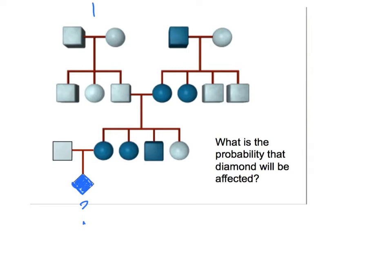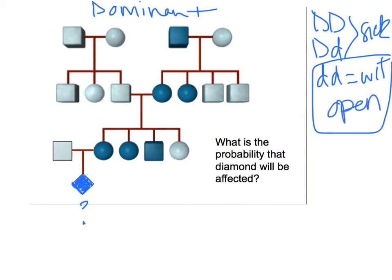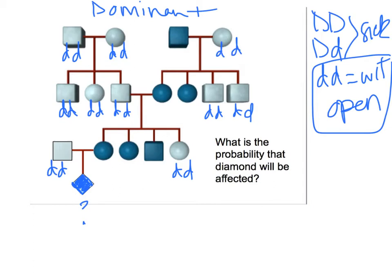Okay, so we're going to go dominant. If this were a dominant pedigree, let's do our big D, big D; big D, little d — these guys are sick, these guys are wild type. Anything that's open is going to be little d, little d. So let's do that while we can, that will help us figure out what's going on. And then again, we're going to look at parents and offspring. If it's a dominant disease, we know each one of these guys has to have at least one big D.